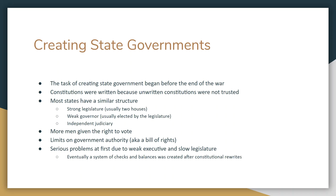State governments start to form before the American Revolution is even over. The way our country was originally going to be designed, states were going to be much, much more powerful than they are today. Constitutions were written because the colonists didn't trust an unwritten constitution. Britain did not have a written down constitution, and technically they don't today. So people wanted it written down so that they could see it. Most states called conventions and had their leading citizens come and develop the system.